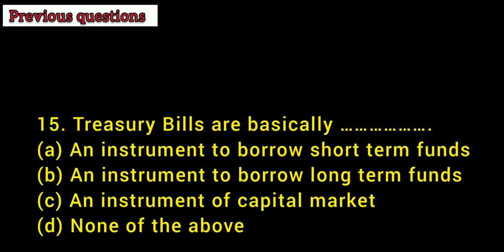Next question: Treasury bills are basically — (a) an instrument to borrow short-term funds, (b) an instrument to borrow long-term funds, (c) an instrument of the capital market, (d) none of the above. The answer is (a): an instrument to borrow short-term funds. Treasury bills are short-term borrowing instruments.